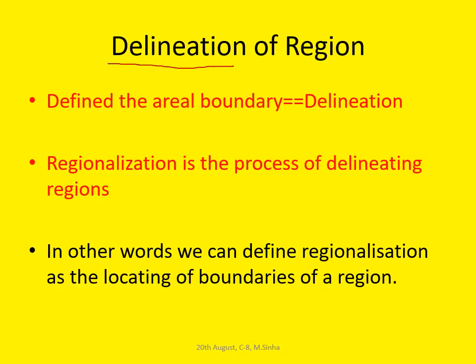Coming to the delineation of region: region is a geographical area or unit of space. Delineation means to demarcate — to demarcate the boundary or the area. To define an areal boundary on the physical space or the three-dimensional geographical area is called the delineation of region.